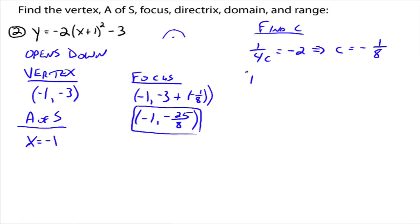And the directrix is, since this is a parabola that opens down, the directrix is a horizontal line. So y equals the y part of the vertex minus the c value. So minus negative 1 eighth. And that means that y is going to equal negative 23 eighths.